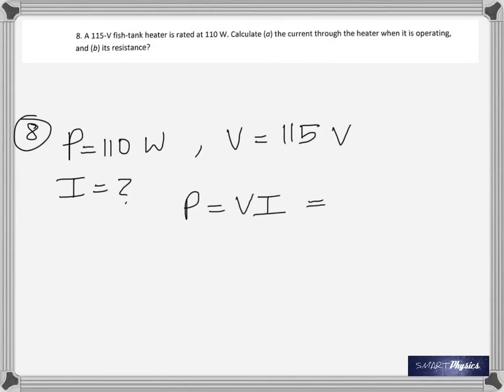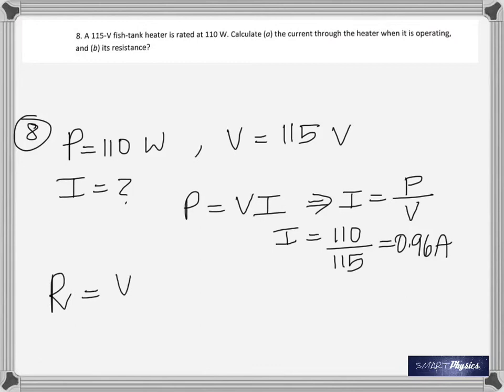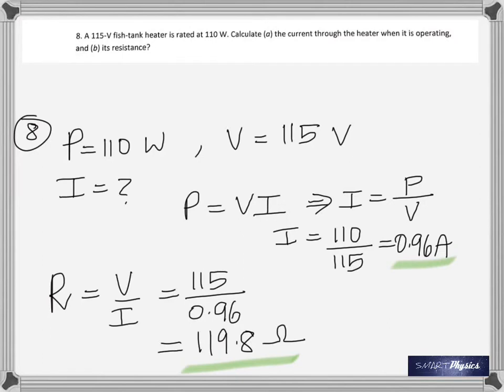All right, number eight: 115 volt fish tank heater is rated 110 watts. Calculate the current when it's operating and its resistance. Straightforward question. Power given, voltage given, to find the current you just divide the power by the voltage. So it's 110 divided by 115, 0.96 ampere. And resistance is voltage by current, so that's quite simple, 119.8 ohms.